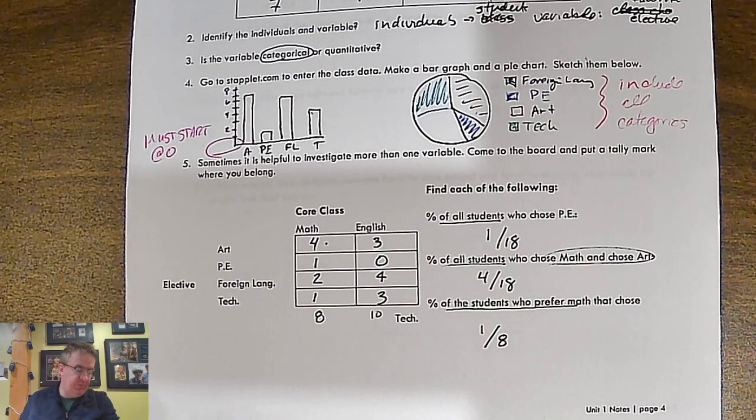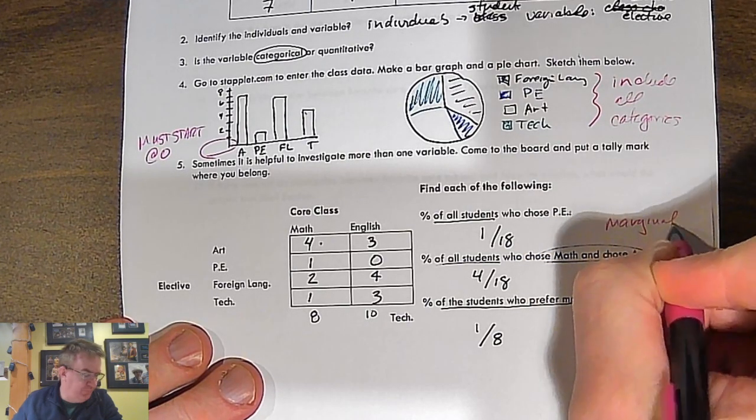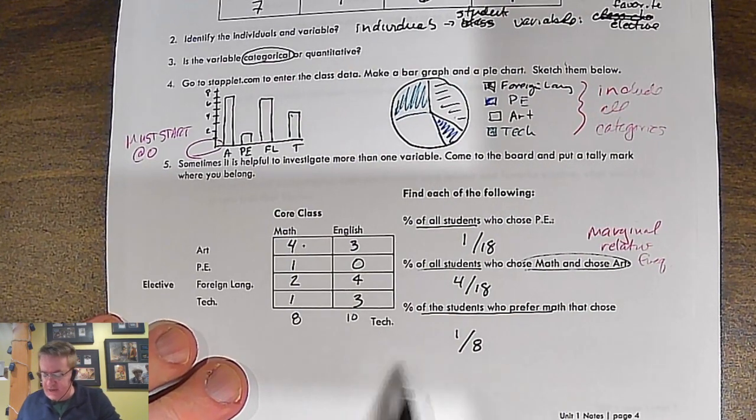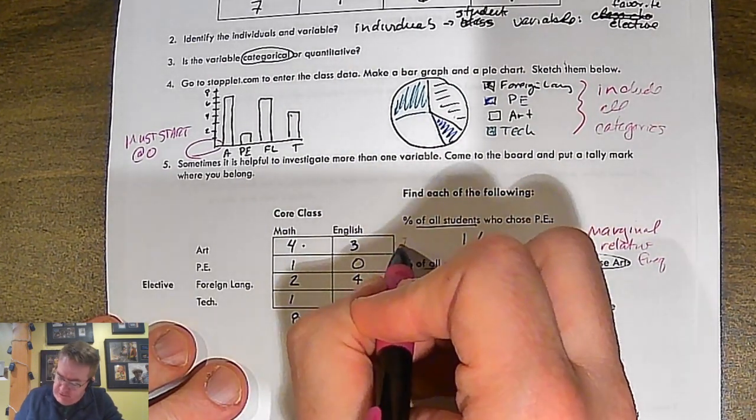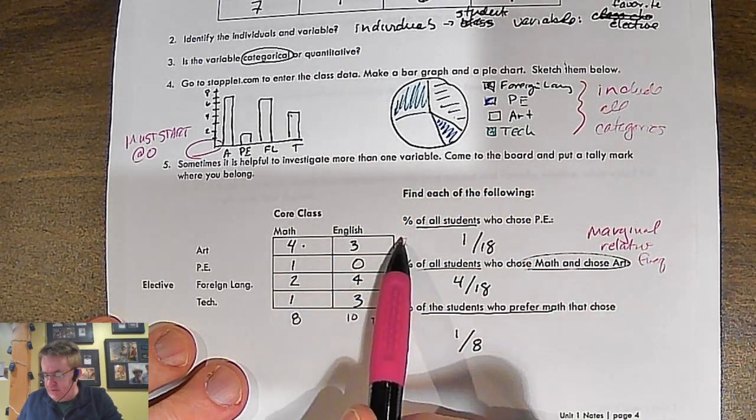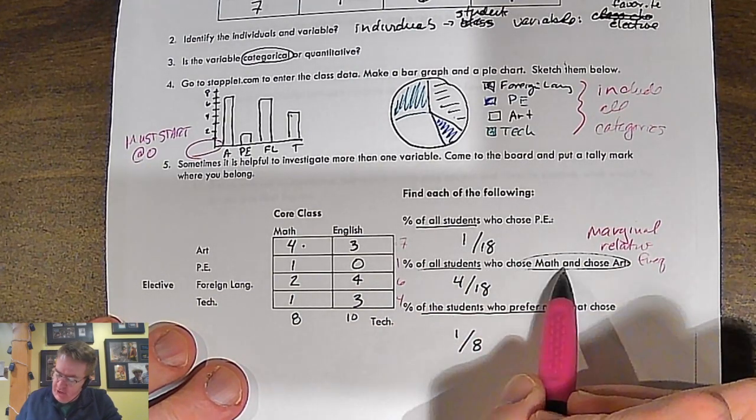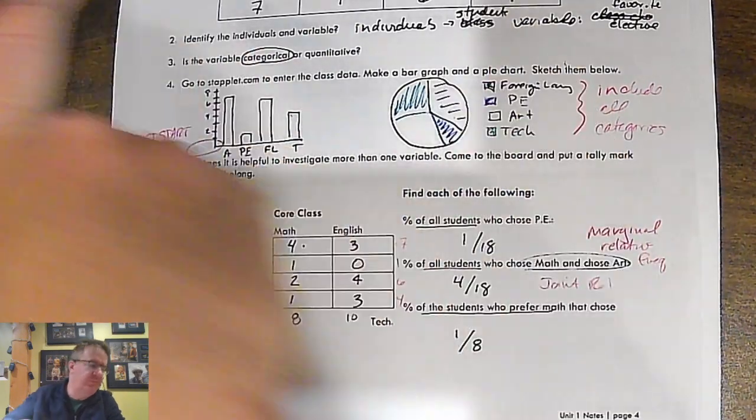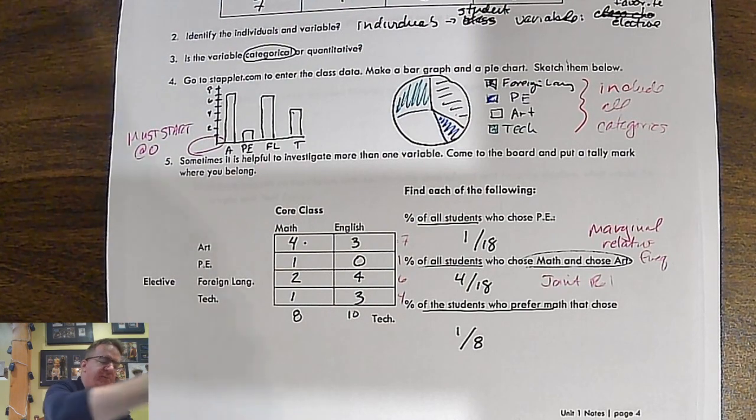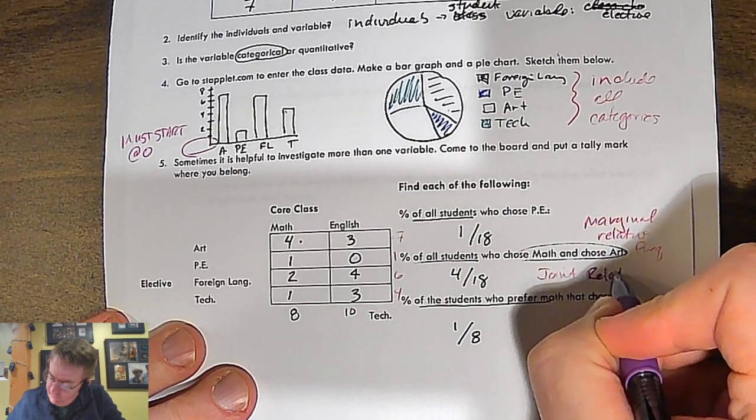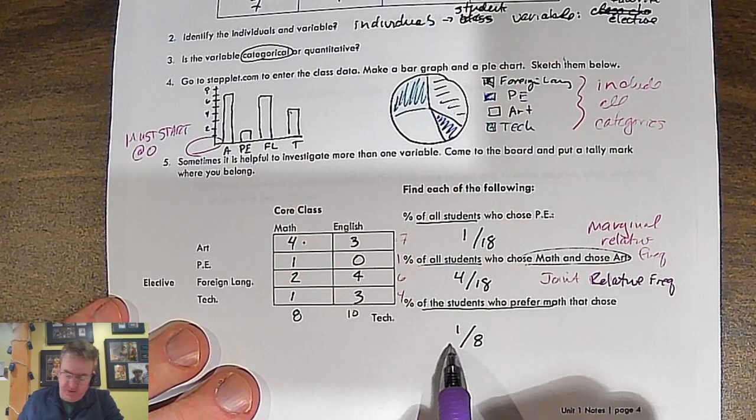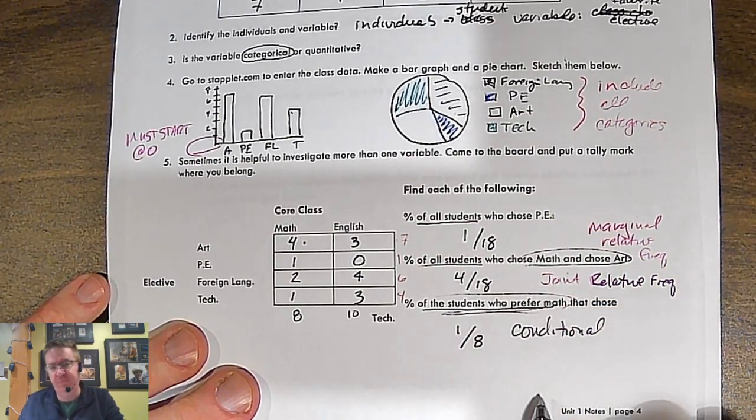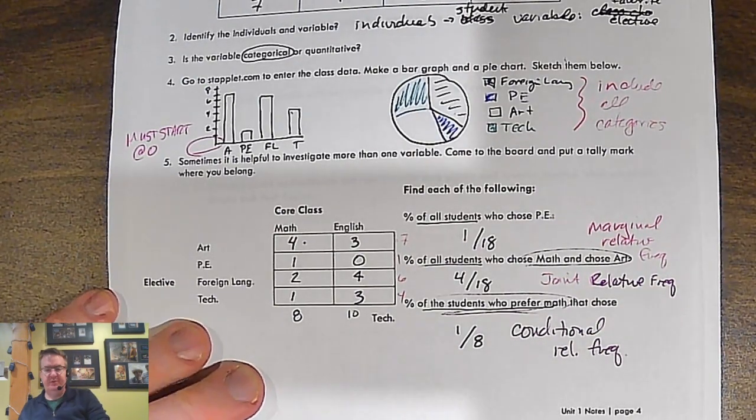Now these each have specific names. This is called marginal relative frequency. The way that I remember it is that you're taking the numbers from the margin. So over here, I have seven, one, six, four. So I'm pulling the total of these, which would be over here in the margin. And I got it that way. Here, we're talking about two different topics. And so that's our joint relative frequency. And then last but not least down over here, this is called conditional. And the reason why it's called conditional is because you have to meet the people who meet this condition. So this is conditional relative frequency. Pretty straightforward.